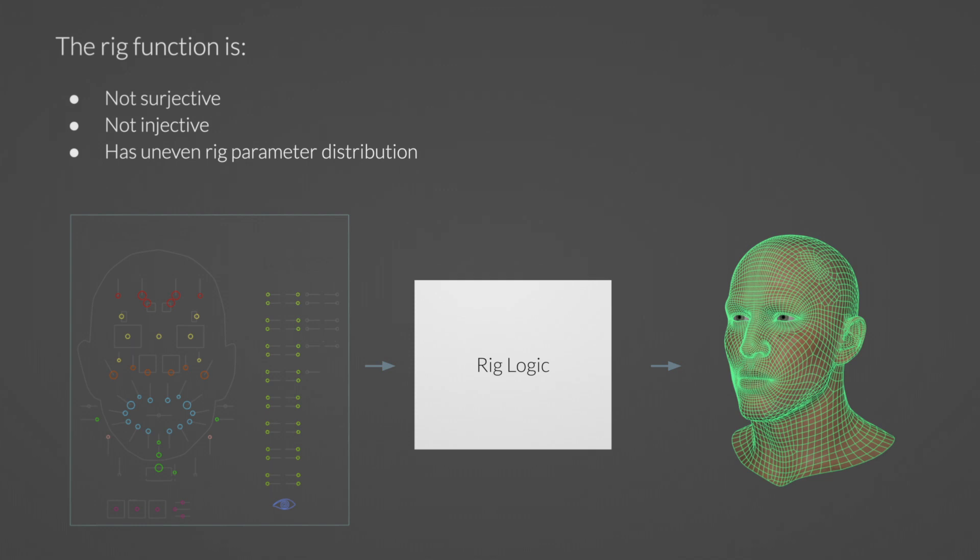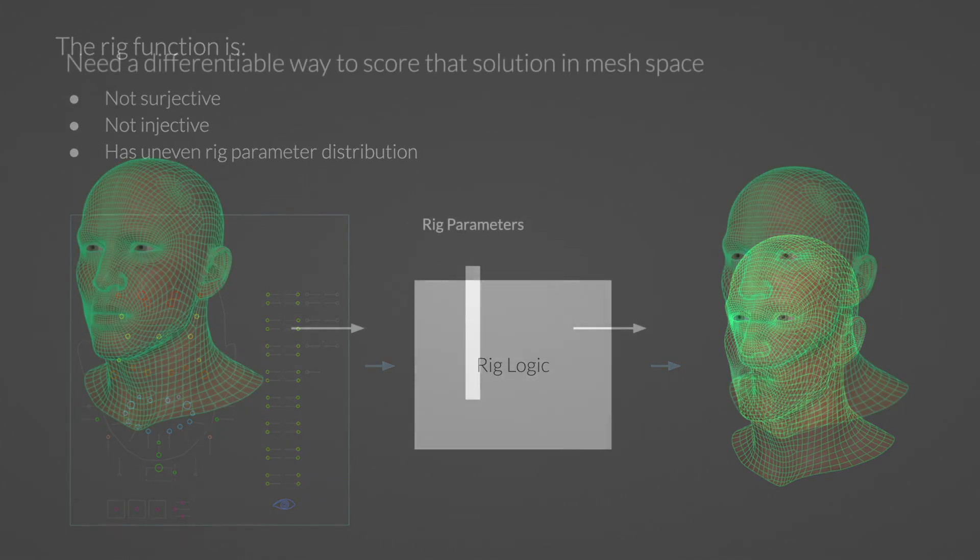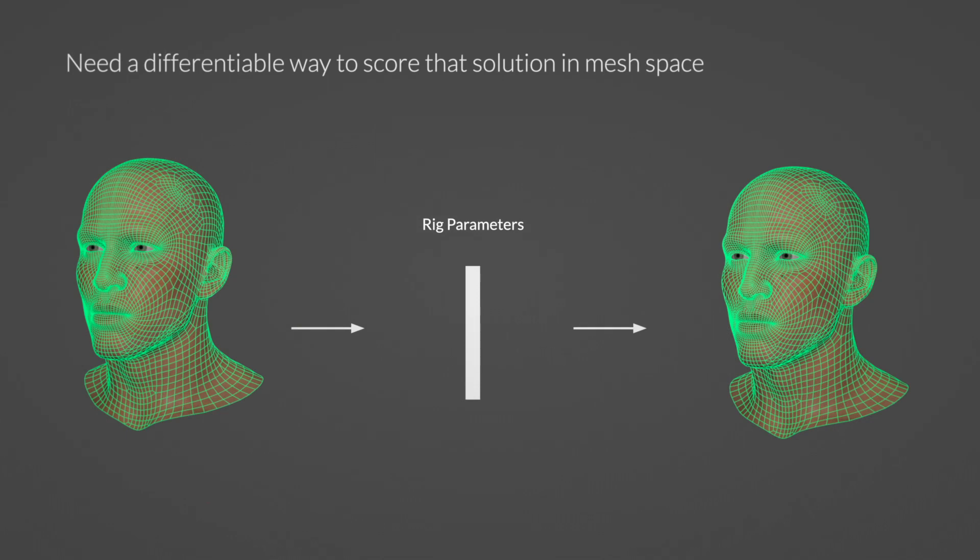Finally, every parameter of the rig might not have equal importance, and so optimizing for rig parameters might yield results that are visually suboptimal. Since the rig-to-mesh function is assumed to be non-bijective and thus non-invertible, we need the rig inversion model to output the best possible vector of rig parameters. To determine which is the best possible set, we need to evaluate those parameters in mesh space instead of in rig space.